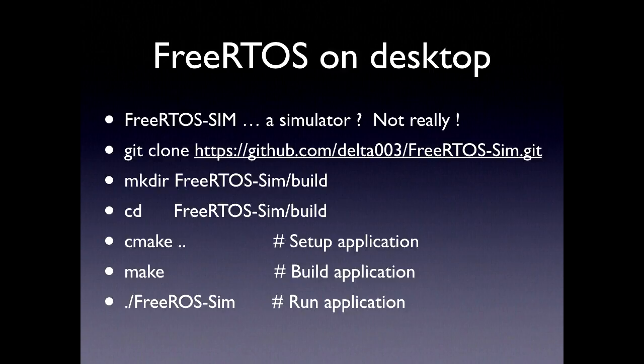When you go to the website and look at the quick start guide, getting this operating system onto hardware isn't that quick, and the reference guide is 400 pages. Mark found FreeRTOS Sim, which runs on Mac and Linux — it's a copy of FreeRTOS that runs on the desktop, allowing you to read documentation and play with concepts before running it on real hardware. You just clone the library, CD to the build directory, use CMake, run make, and your application is running.